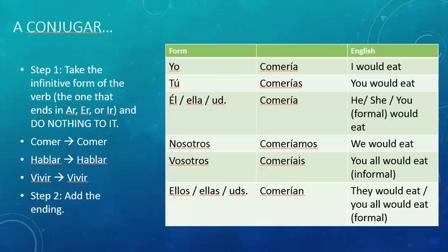Nosotros comeríamos — we would eat. Vosotros comeríais — you all would eat. Ellos, ellas, ustedes comerían — they would eat, or you all would eat formal. It's the same process if it's an AR verb or an IR verb. Nothing different.